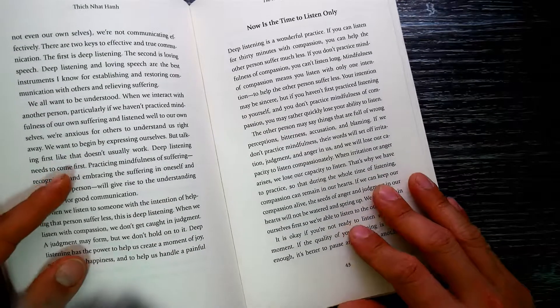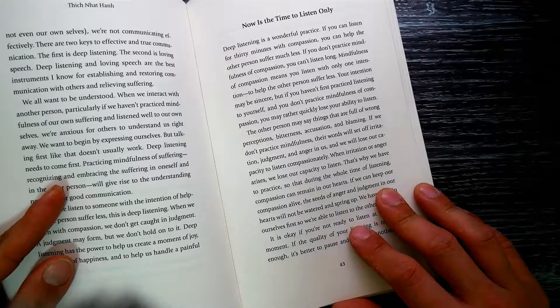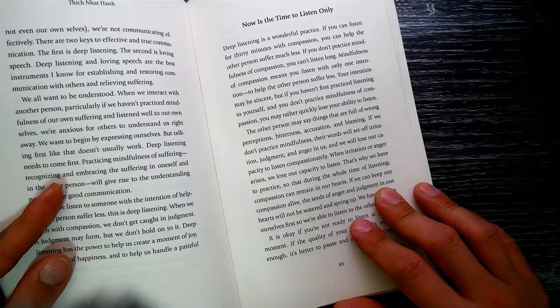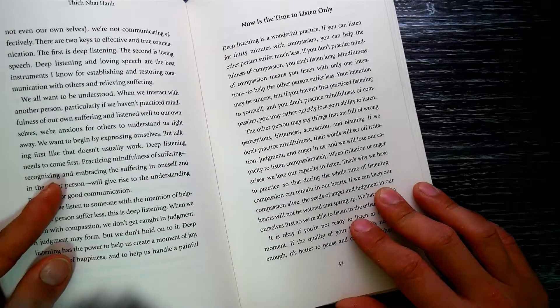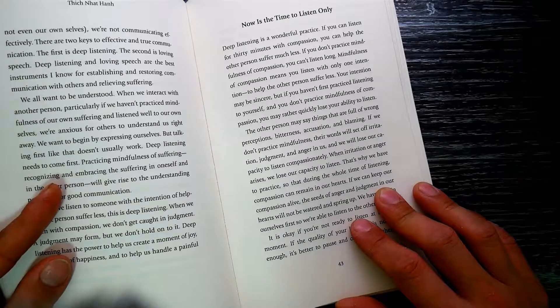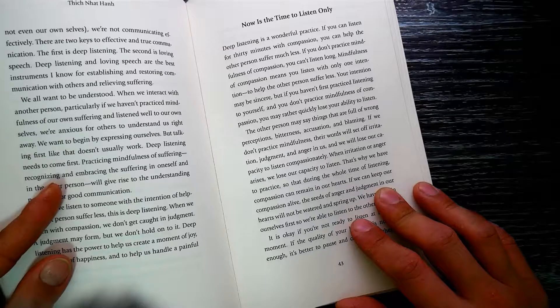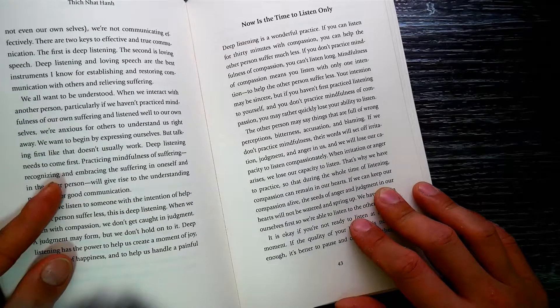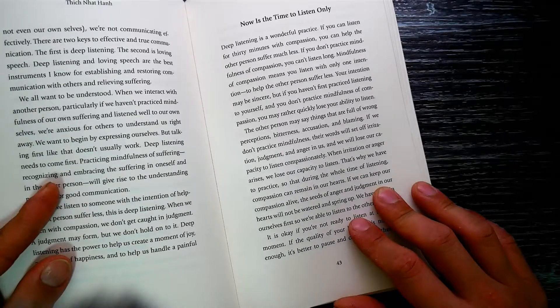The other person may say things that are full of wrong perceptions, bitterness, accusation and blaming. If we don't practice mindfulness, their words will set off irritation, judgment and anger in us, and we will lose our capacity to listen compassionately. When irritation or anger arises, we lose our capacity to listen. That's why we have to practice.